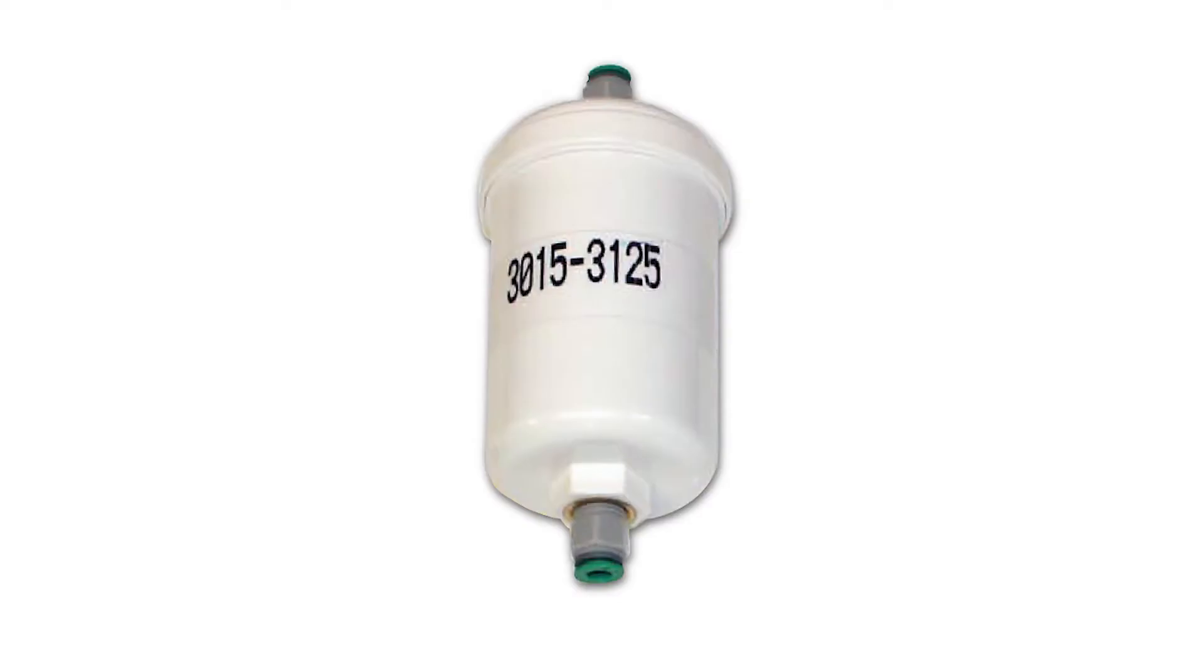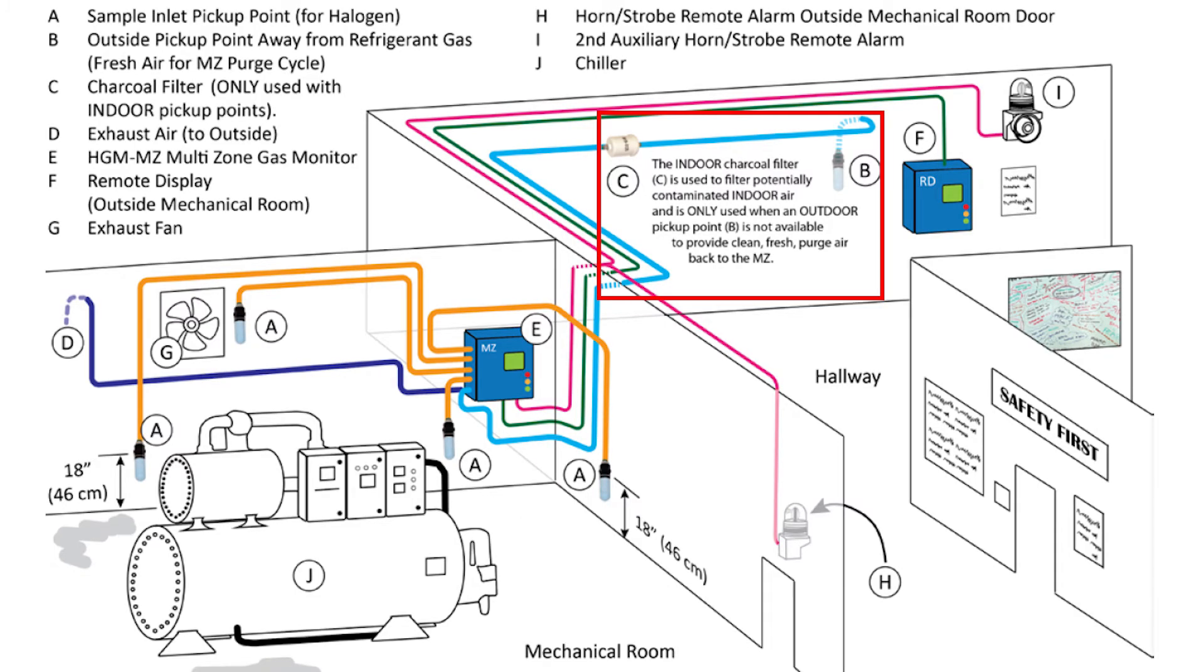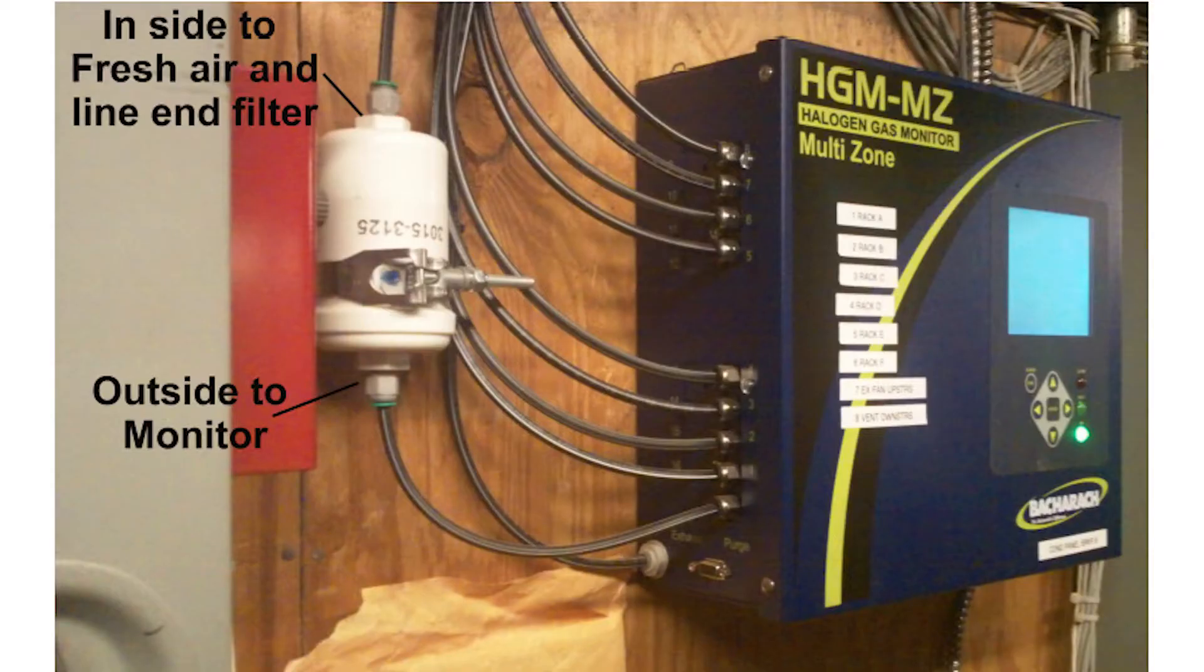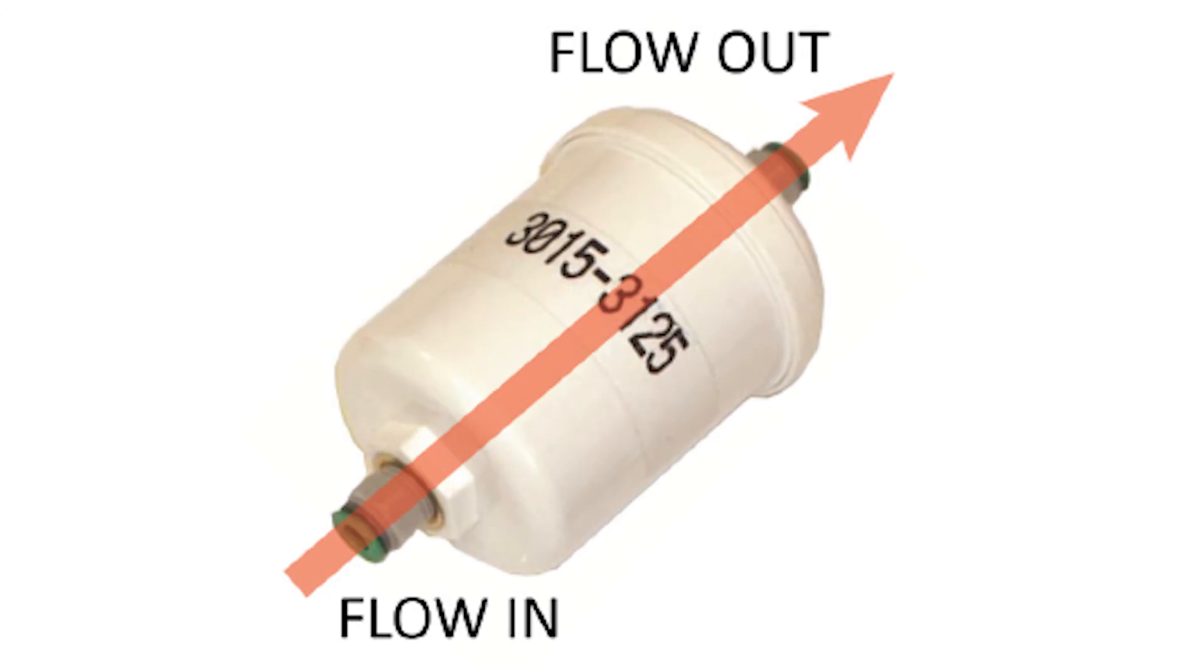The charcoal purge filter, which will be integral to purging contaminants from the monitor, should be mounted outside of the mechanical room where air samples will be taken and away from any potential contaminants that could interfere with the system. It is recommended that the charcoal filter is placed near the monitor so it is easily accessible for maintenance and replacement. Use tubing to connect the outside of the charcoal purge filter to the purge port on the monitor.